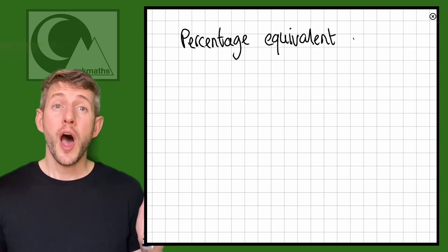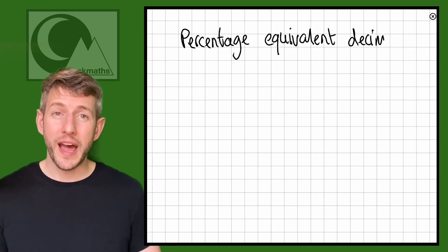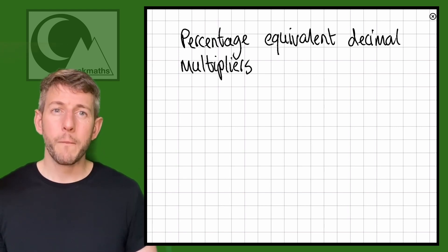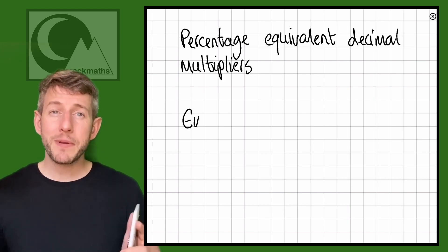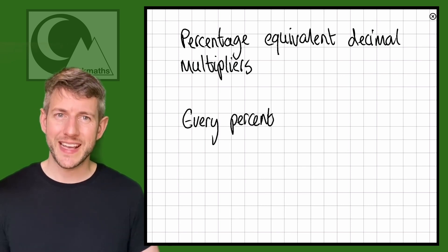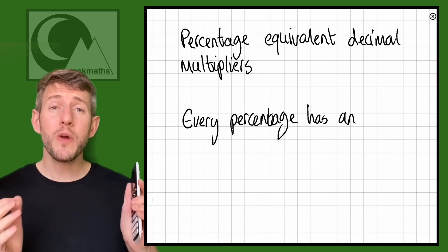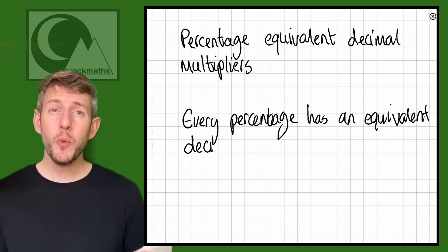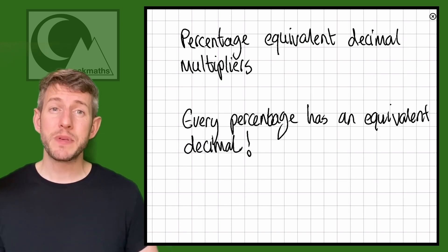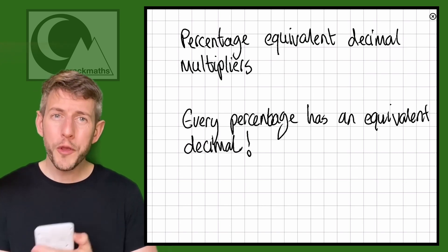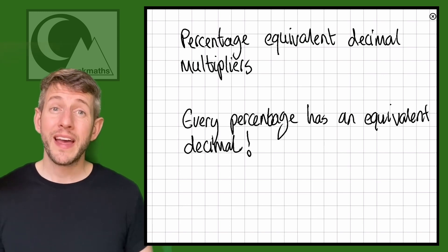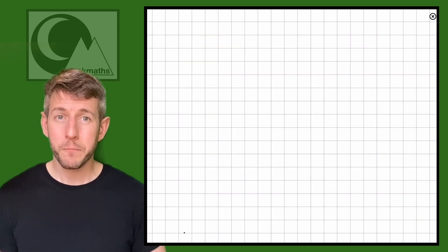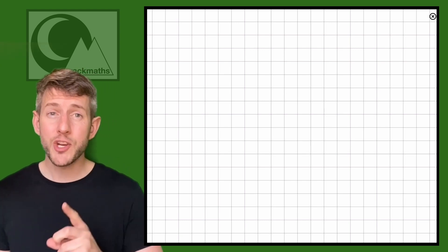You might know by now that every percentage has an equivalent decimal. The beautiful thing about this is that if you ever want to find a certain percentage of an amount, all you have to do is find its equivalent decimal and then multiply the amount by that. Let me show you what I mean.